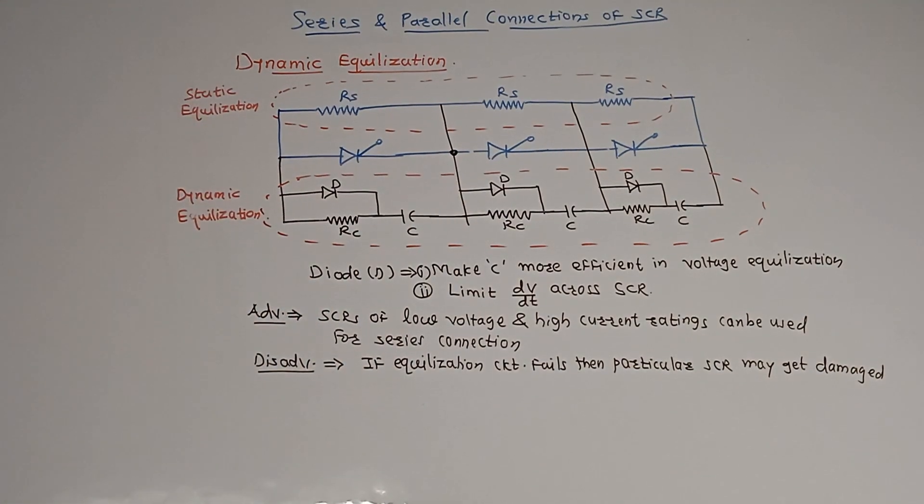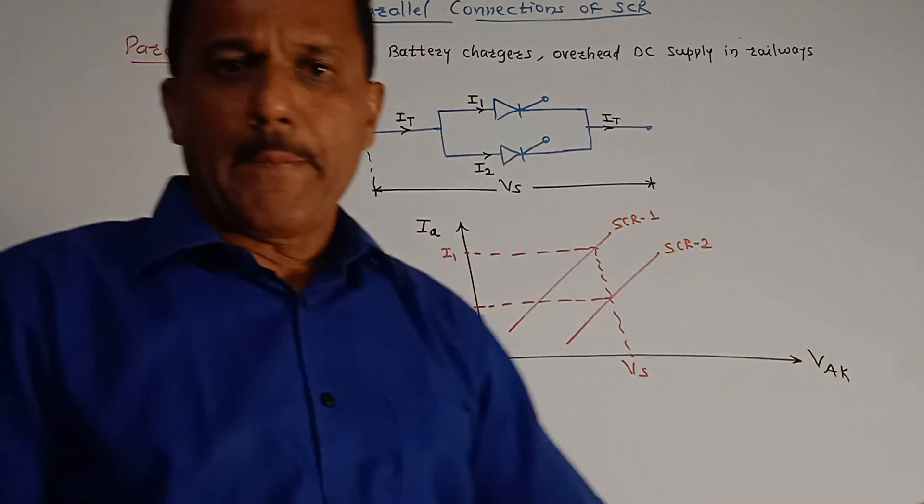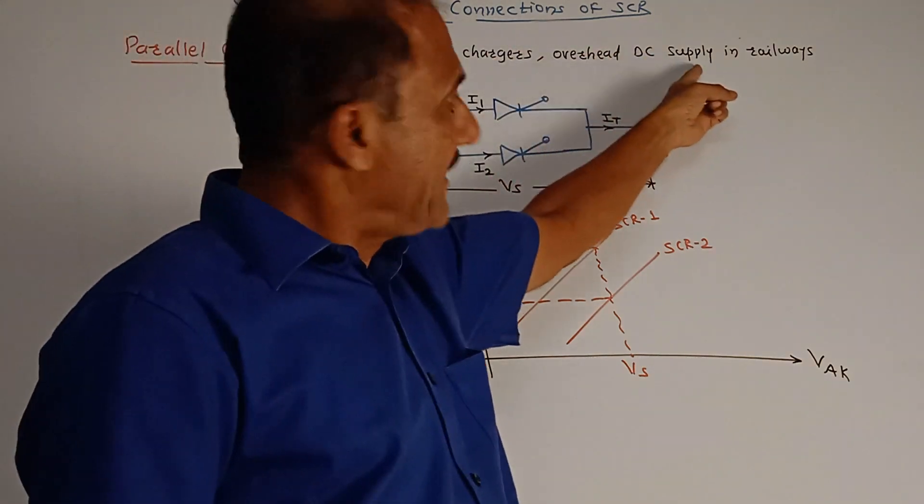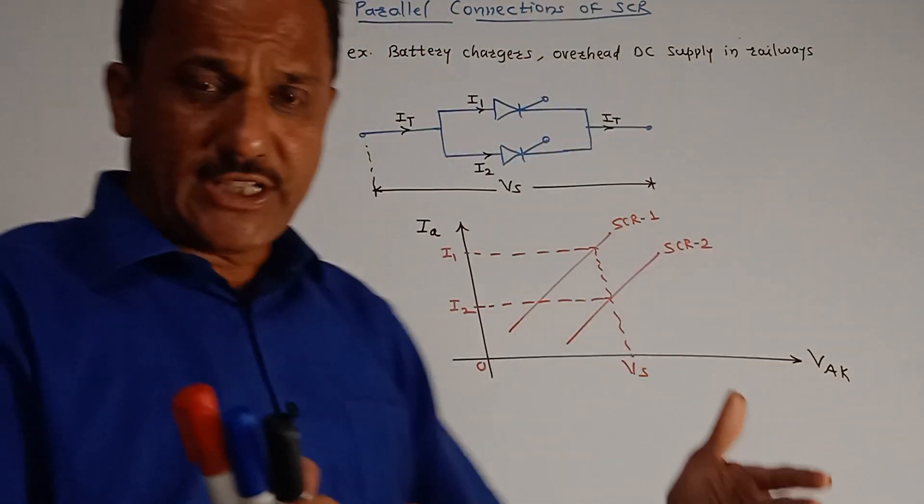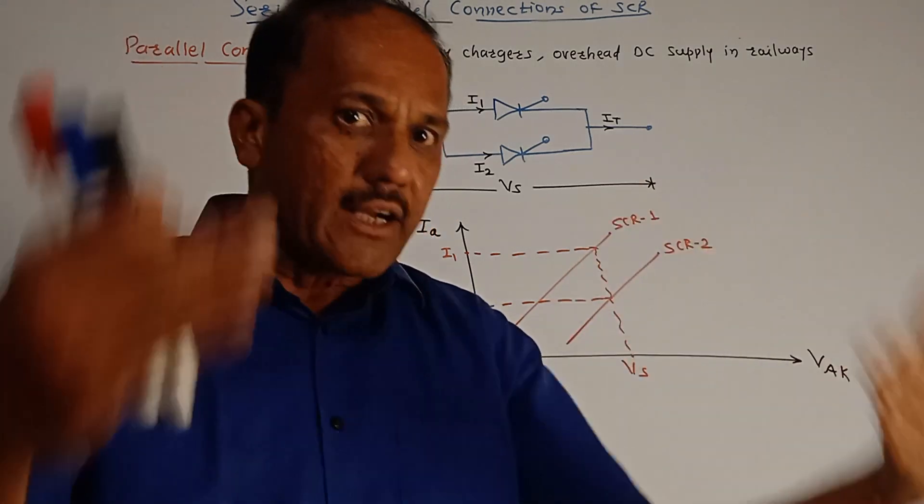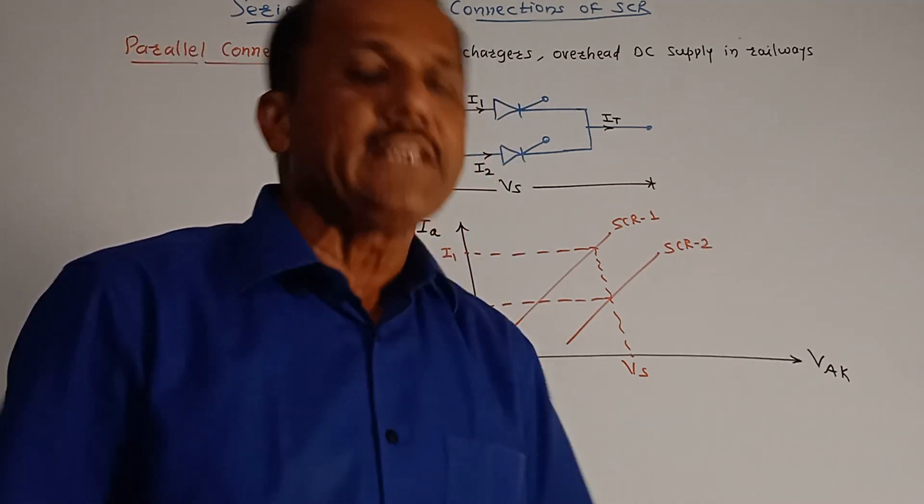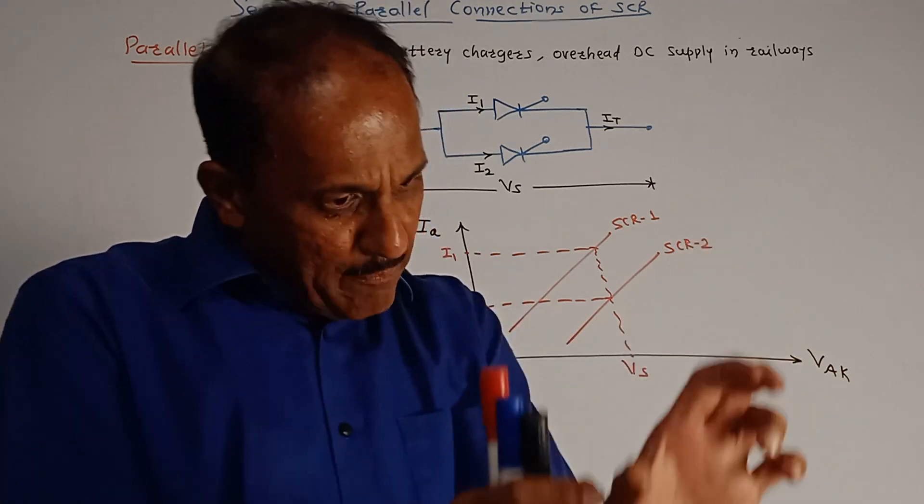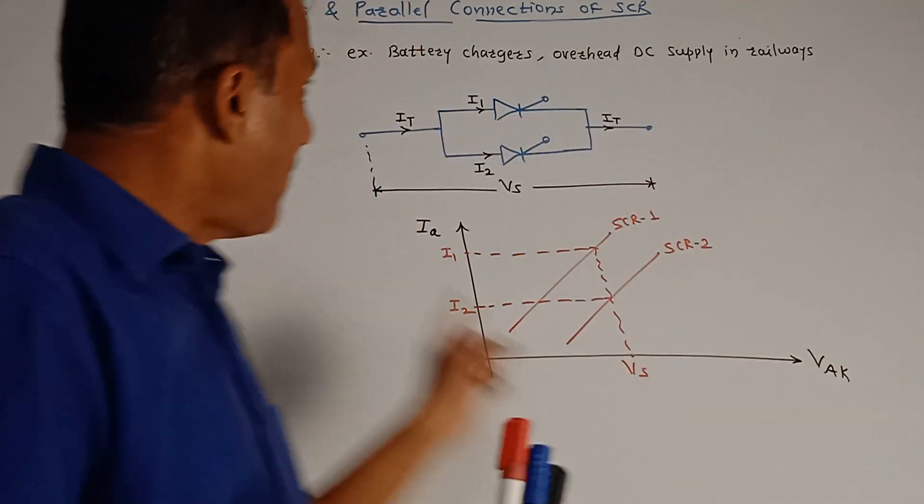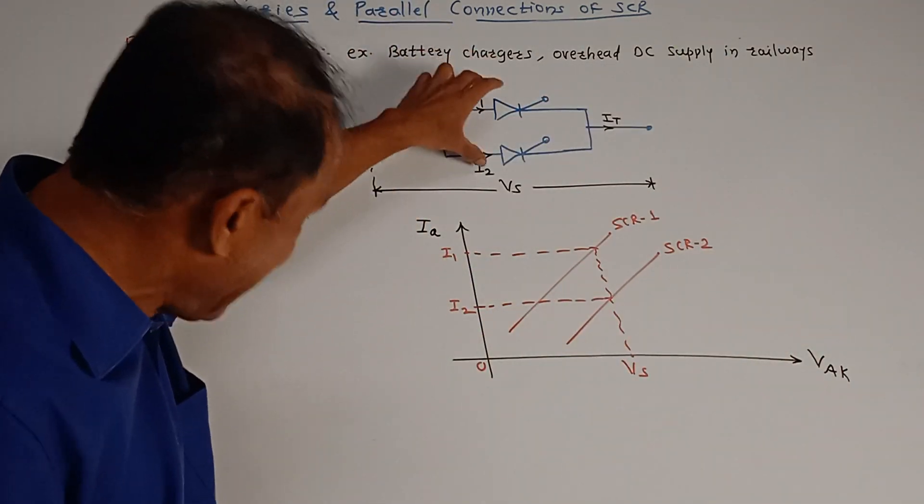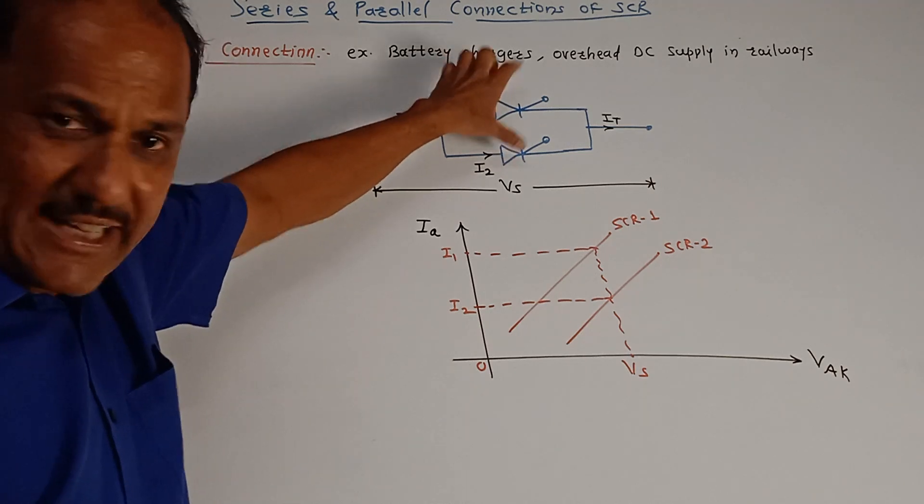Parallel connection of SCRs: practical examples are battery chargers or overhead DC supply in railways. In such cases, especially in case of battery chargers, there is a requirement of very high current. So in such cases, parallel combination is preferred. Parallel connection of SCR is used. So this is the simple diagram in which I have shown two SCRs, SCR 1 and SCR 2, which are connected in parallel.